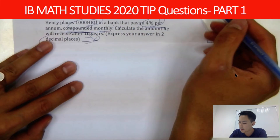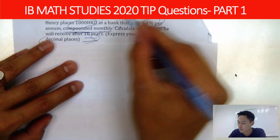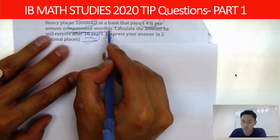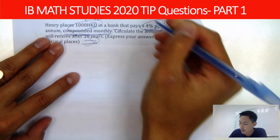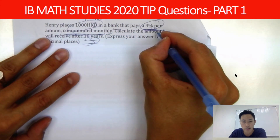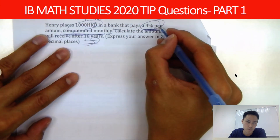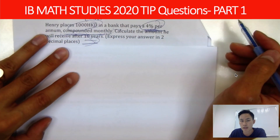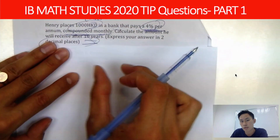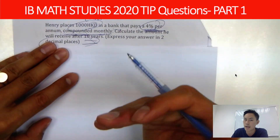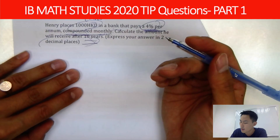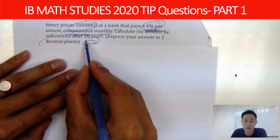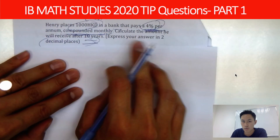Let's read the question first. Henry placed $1,000 in the bank, so the capital C equals 1,000. The interest is 4% per annum, compounded monthly — meaning you receive the interest every month. Calculate the amount received after 10 years, answered to two decimal places.